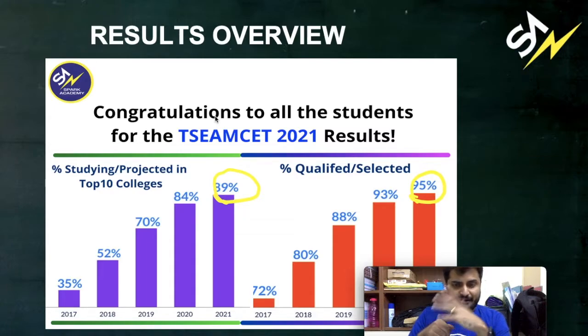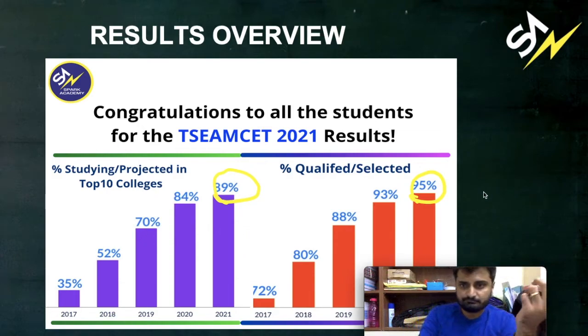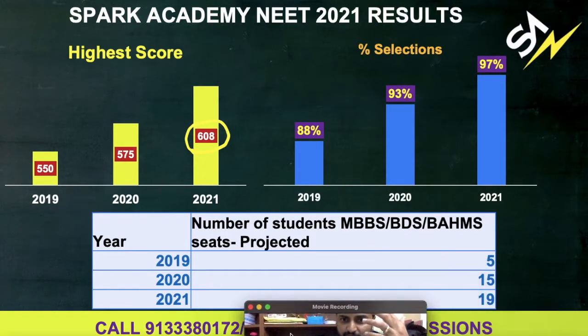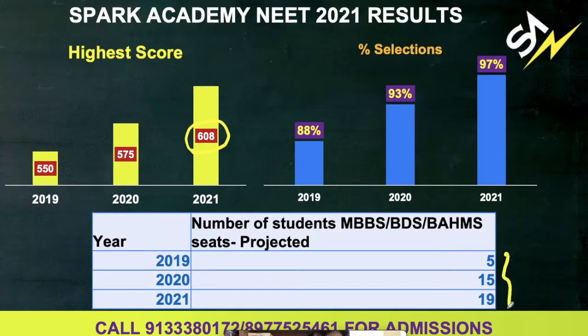We're close to 89 percent of our students are projected to get in top 10 colleges and 95 percent of their students have qualified for the examination. Same as the case with NEET. You are observing that our highest score has also increased and in terms of number of admissions as well, the projections for getting into MBBS, BDS is also increasing every year. Close to, we are expecting out of the batch of 30, 19 selections. And 97 percent of them have qualified for the NEET exam as well. So we've got some very good results.